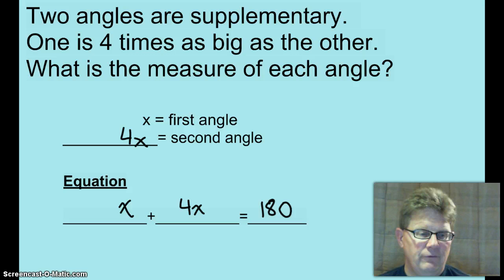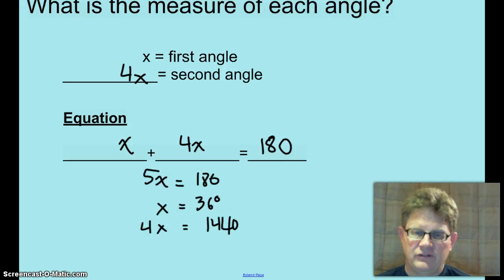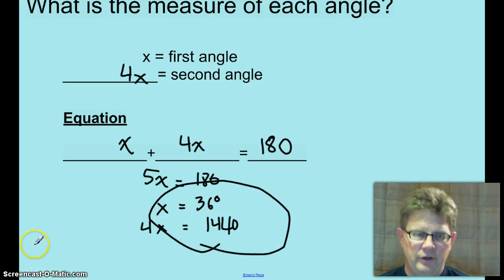All right, pause and solve, and I'll be right back. x equals 36 degrees, so the two angles are 36 degrees and 144 degrees. All right, let's go ahead and move on to adjacent angles.